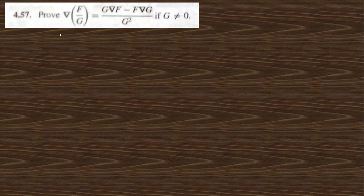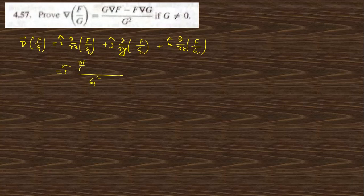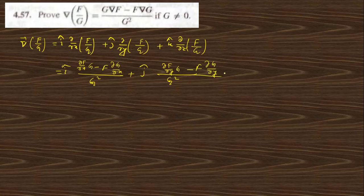Problem 4.57 says: prove that div(f/g) equals a given expression. We write div(f/g) = i(∂/∂x)(f/g) + j(∂/∂y)(f/g) + k(∂/∂z)(f/g). Applying the quotient rule, the x-component gives (1/g²)[g·(∂f/∂x) − f·(∂g/∂x)], and similarly for the y and z components.